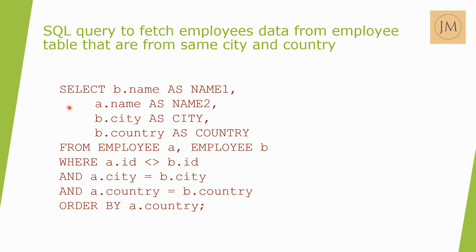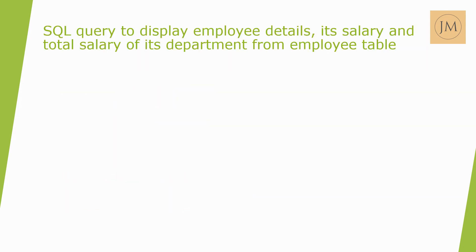We select B.name aliased as B, A.name aliased as A, B.city, and B.country from the self-joined table. The next question: write an SQL query to display employee details, salary, and the total salary of its department from the employee table.